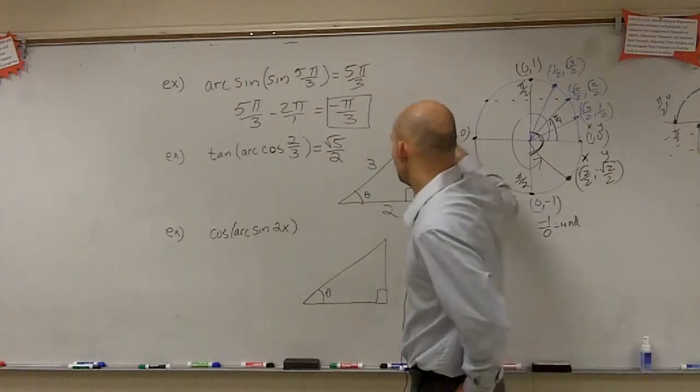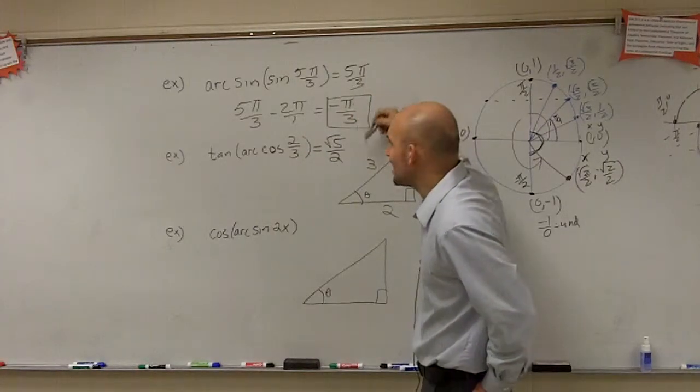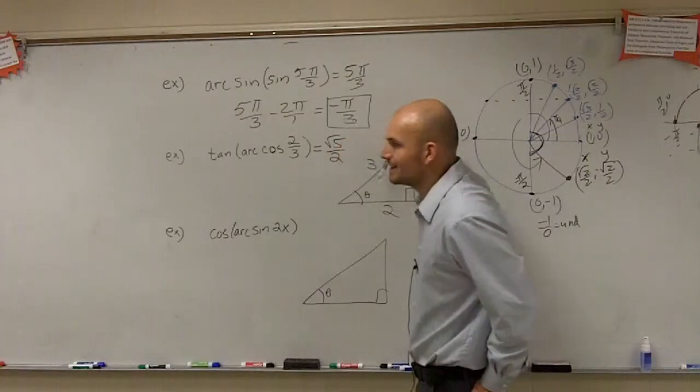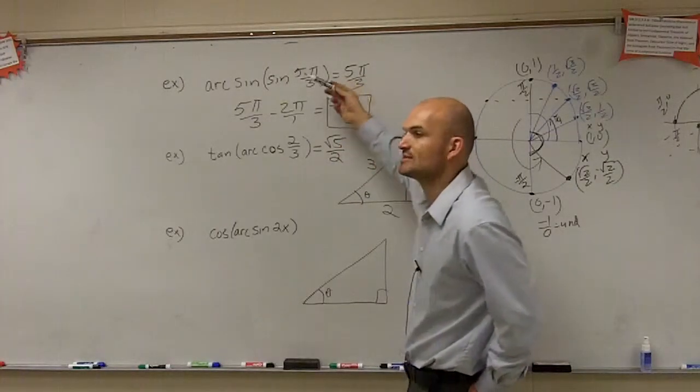One. One. So rather than saying it's always opposite over hypotenuse, since the hypotenuse is already one, we just said, oh, just put it as the opposite side. That's why we say it's always the y-coordinate.